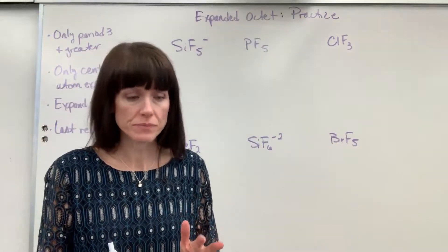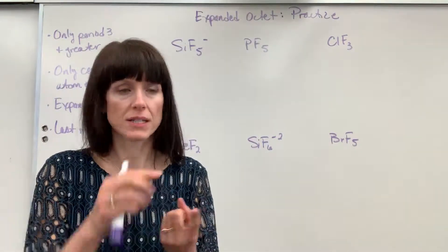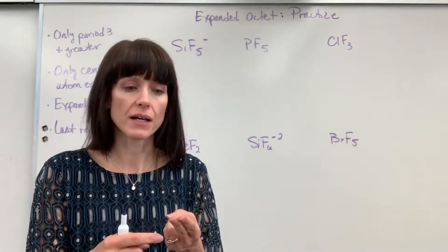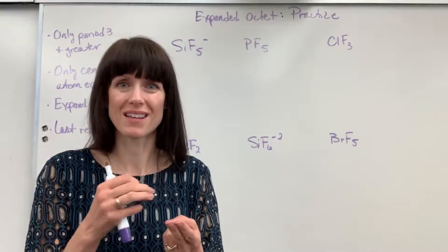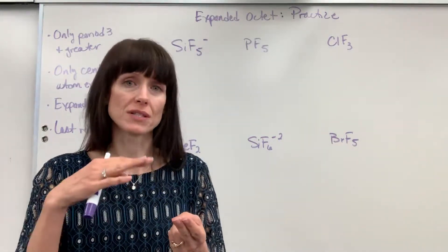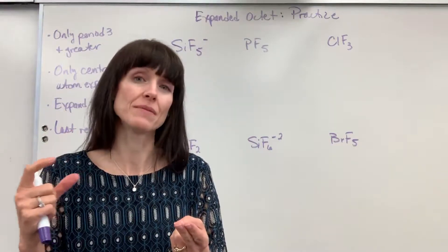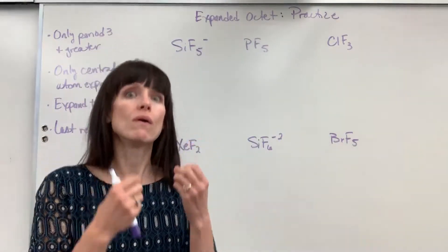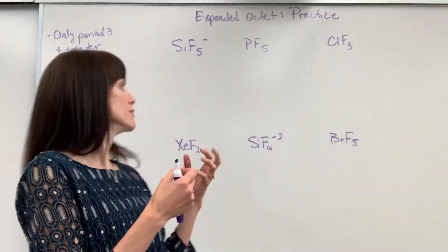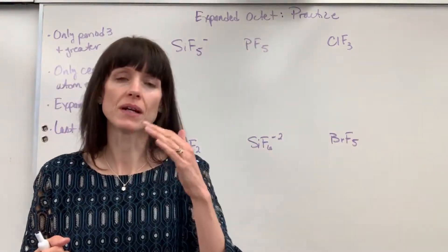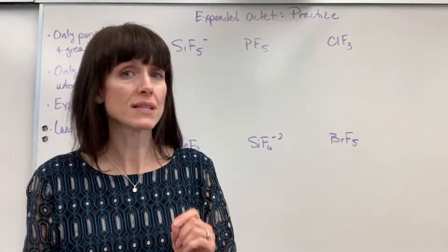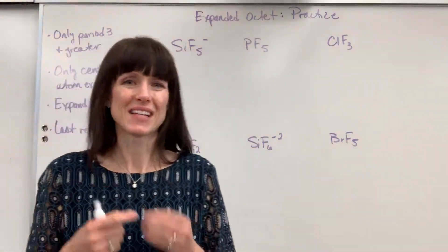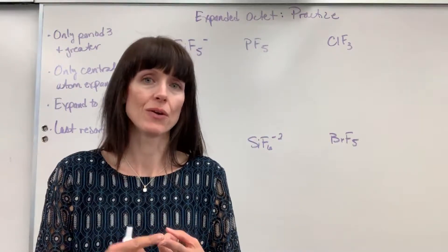Quick review: you always ask yourself, number one, can I do a regular octet just sharing electrons? If you can't, then you go to step two — can I do a coordinate covalent bond to try and maintain the octet, where the central atom shares two electrons to create the bond and the substituent atom doesn't have to share any electrons? If you can't do that, then number three, you expand. Remember, you only expand if the central atom is in period three or greater. Only the central atom expands; the substituent atoms won't expand. The central atom can only expand to a 10 or a 12.